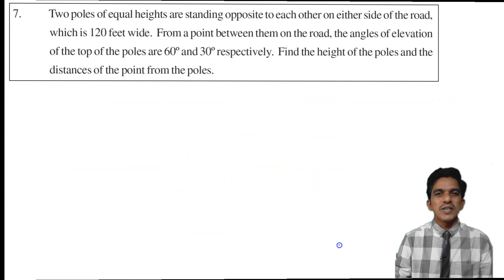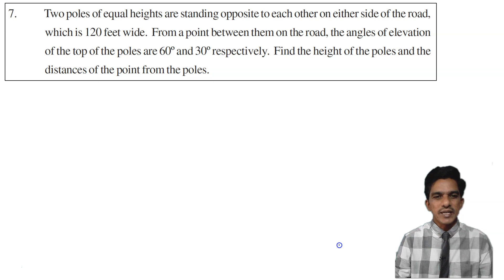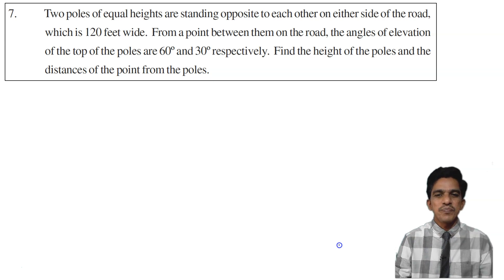This is your question number 7. Two poles of equal heights are standing opposite to each other on either side of the road, which is 120 feet wide. From a point between them on the road, the angles of elevation of the top of the poles are 60 degrees and 30 degrees respectively. Find the height of the poles and the distance of the point from the poles.